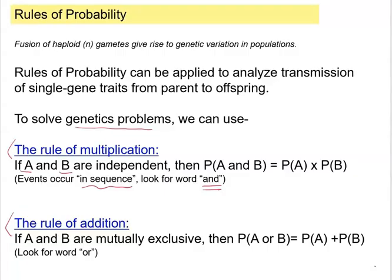We want to calculate the probability for event A and the probability for event B. To find the probability of these two events both happening, we would have to multiply them together.